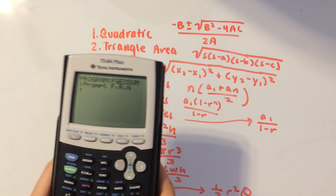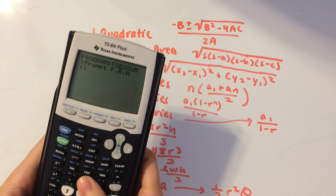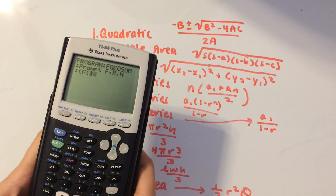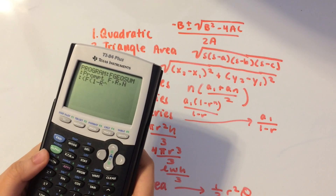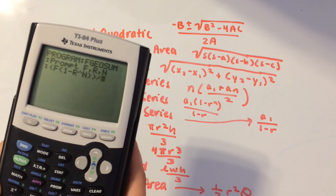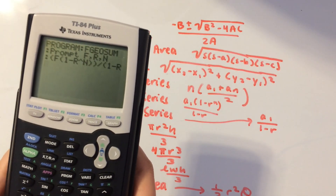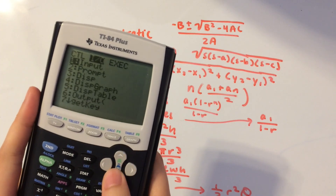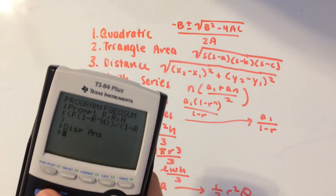Now enter the formula: in parentheses, F times (1 minus R) caret N, close parentheses, divided by (1 minus R) in parentheses. That should be it. Go to Program, display the answer, and we're done with the finite geometric series.